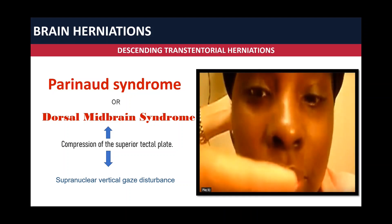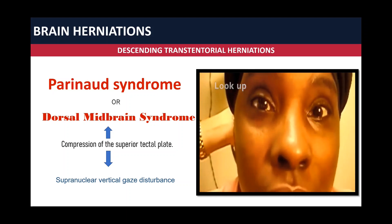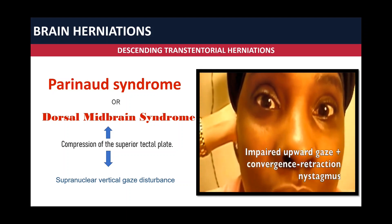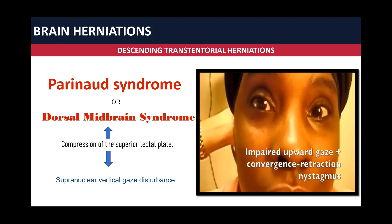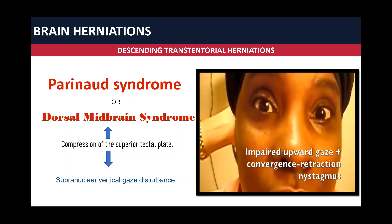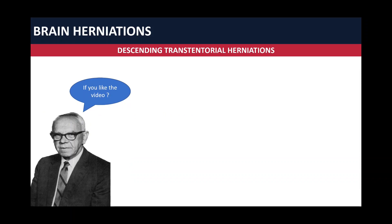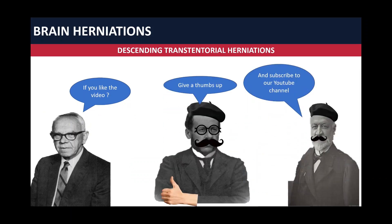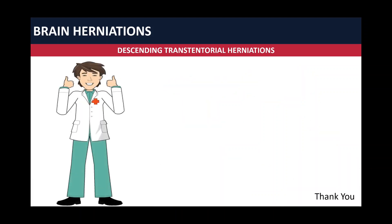Now we are going to see a patient with Parinaud syndrome. When the patient is asked to look up, she will present with impaired upward gaze and convergence-retraction nystagmus. If you liked the video, give a thumbs up and subscribe to our YouTube channel. Thank you, bye-bye.